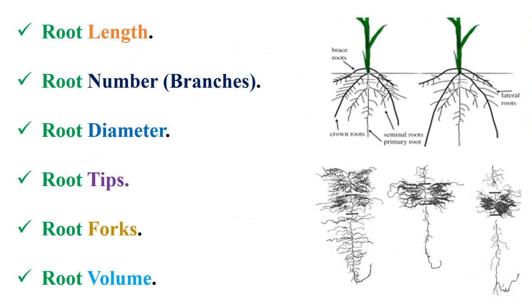WinRizzo makes analysis by tracing roots using colors to analyze root length, root numbers or branches, root diameter, root tips, root forks, and root volume, as mentioned in the figures inside the slide and next slide.